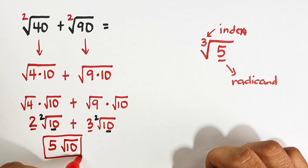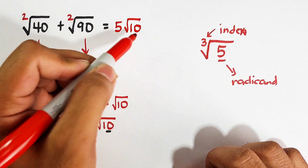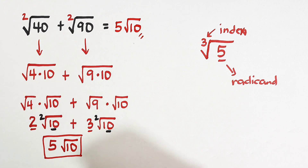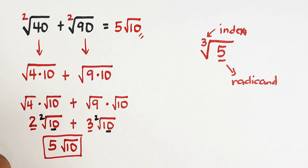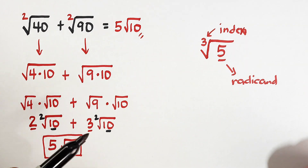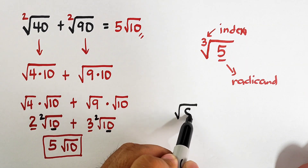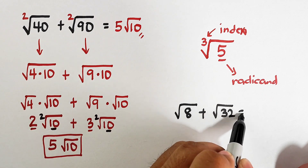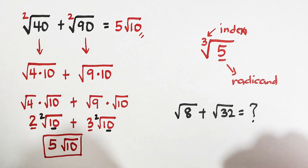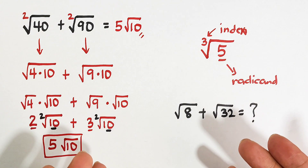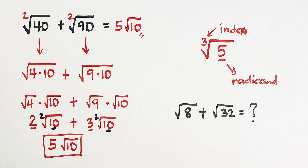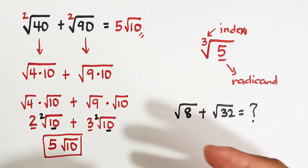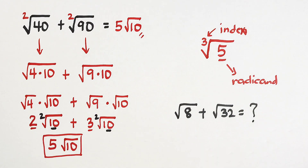As you can see, the answer to this problem is 5 times the square root of 10, or 5√10. Now as part of our routine, here's a practice problem: the square root of 8 plus the square root of 32. Let me see in the comment section below if you can answer and apply what you've learned. I hope you learned something from this video. If you're new to my channel, don't forget to like and subscribe and hit the bell button for updates. Again, it's me Teacher Go — thank you very much, bye bye!